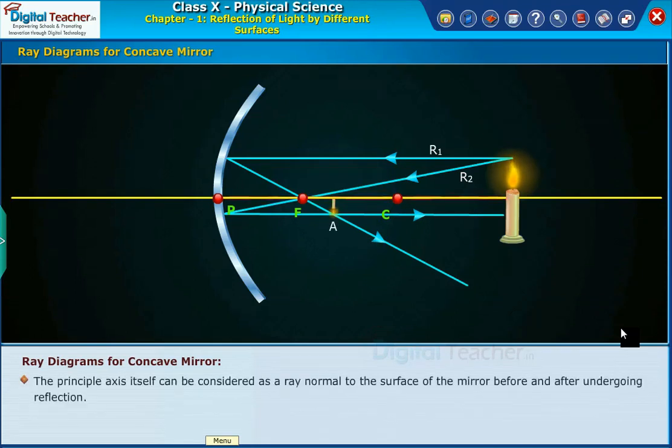The principal axis itself can be considered as a ray normal to the surface of the mirror before and after undergoing reflection.